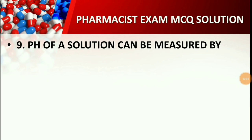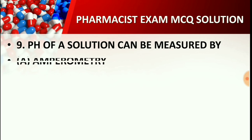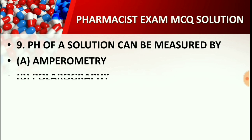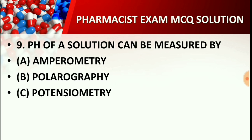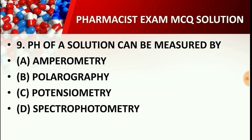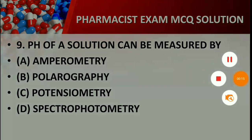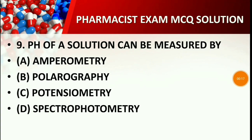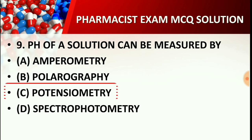Question number nine: The pH of a solution can be measured by — Option A: Amperometry, Option B: Polarography, Option C: Potentiometry, Option D: Spectrophotometry. You may pause the video to think about the correct answer. The right answer is Option C: Potentiometry. The potentiometric method is used for measurement of pH of a solution.